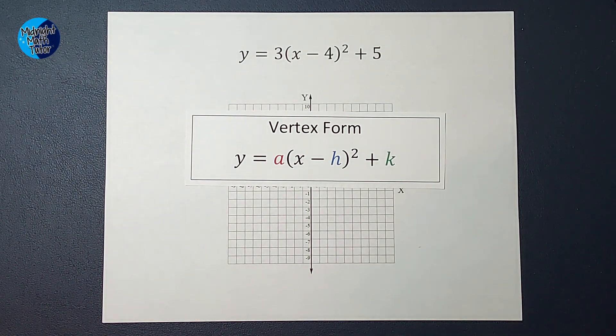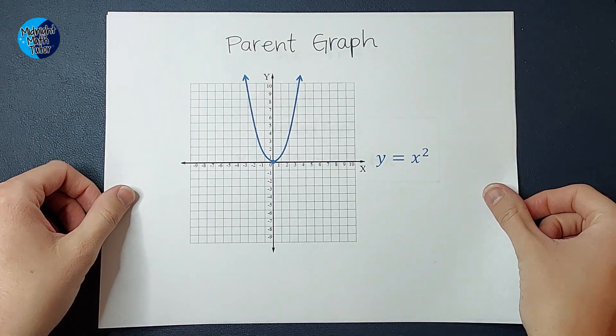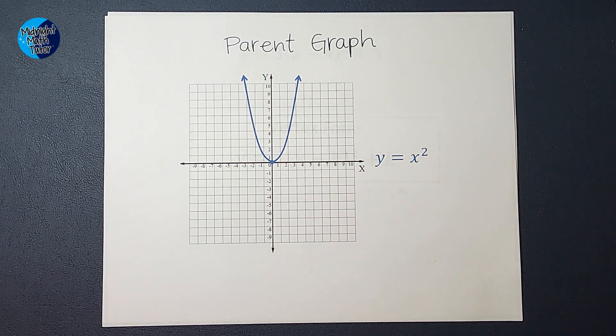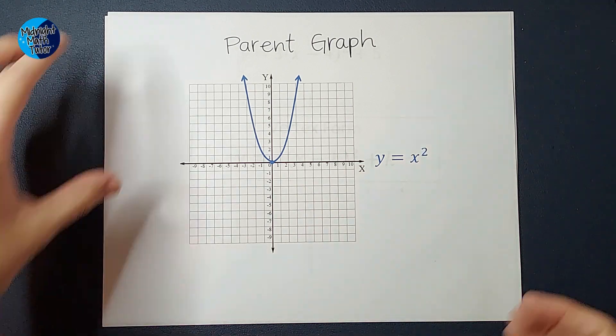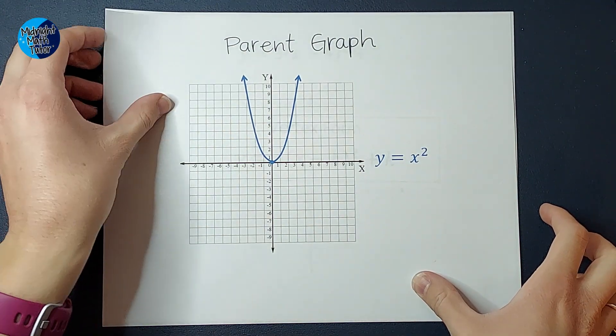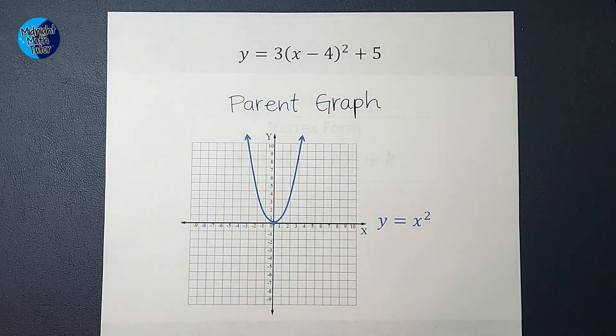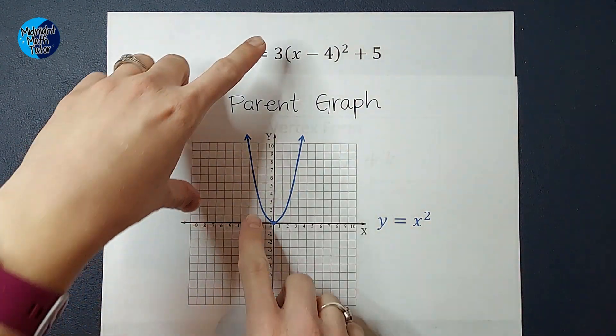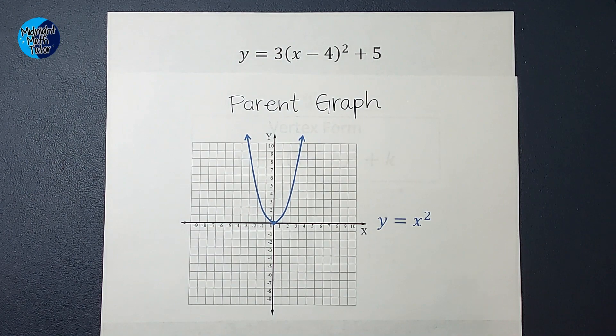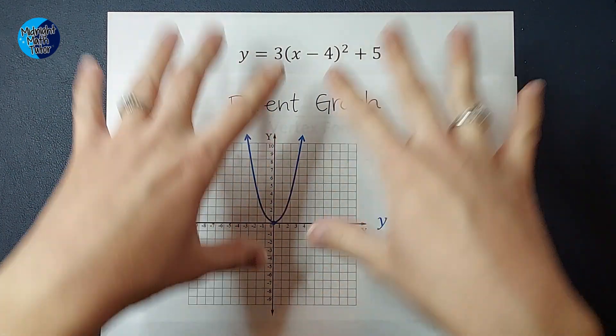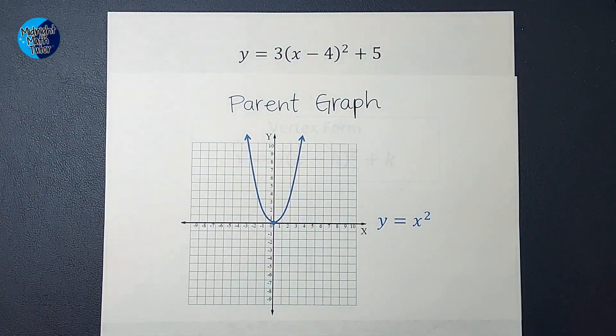The cool thing about this is when we are being asked to graph a parabola, we have a cool thing called a parent graph. So if you were being asked just to graph y equals x squared, this is what your graph would look like. But you're like, lady, I'm not being asked to graph that. I'm being asked to graph something that might look something like this, right? So the cool news is these two graphs are very much related, and I can use this graph to figure out what this one looks like.